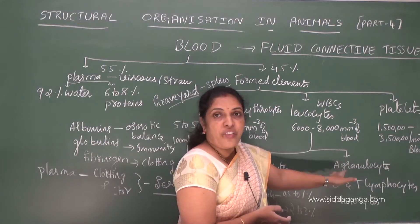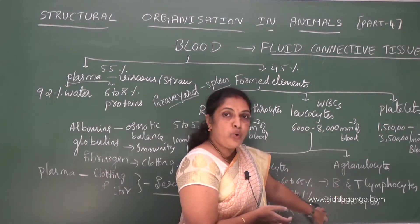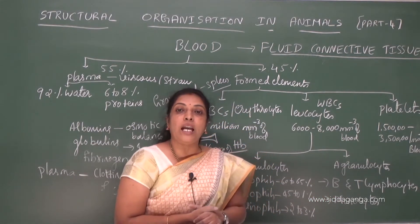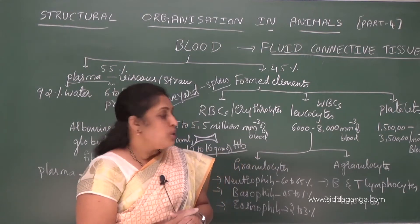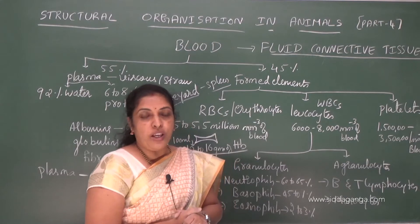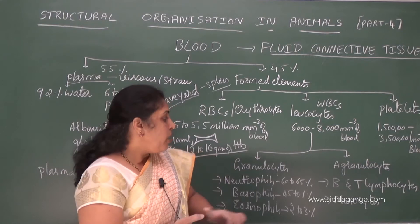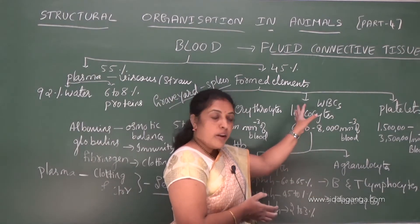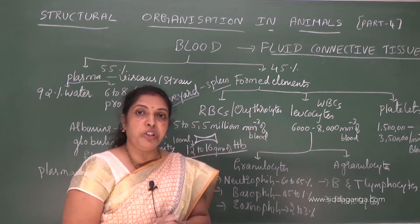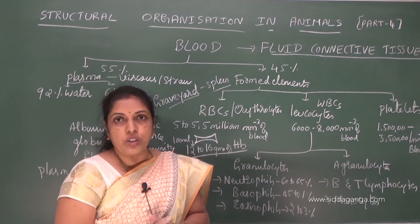Agranulocytes have an absence of granules in their cytoplasm. Under agranulocytes we see monocytes and lymphocytes. Lymphocytes are further classified into B and T lymphocytes. B lymphocytes produce antibodies, which provide immunity to the body. All these WBCs mainly help to provide immunity to an organism by killing disease-causing microbes.